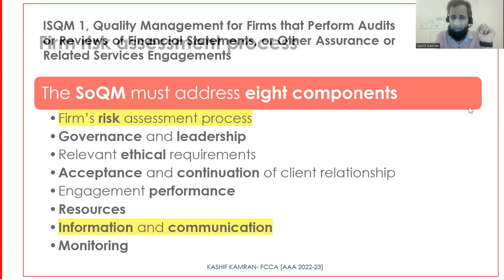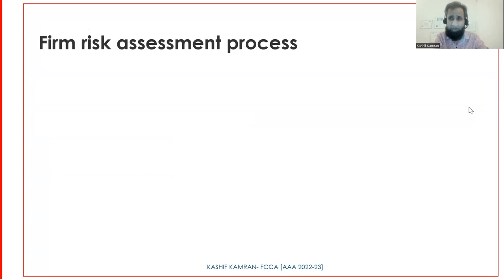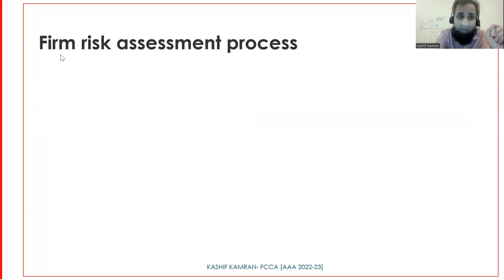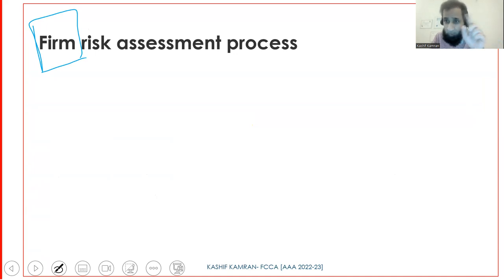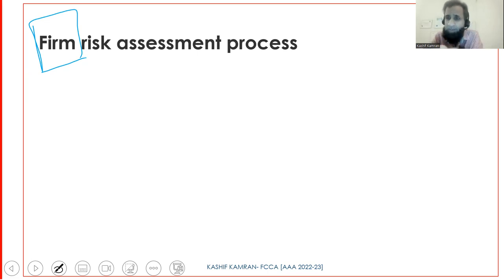The first component — and this is the new one, not previously in ISQC1 — is the Firm Risk Assessment Process. We're not talking about audit risk assessment or risk of material misstatements. We're talking about how an audit firm assesses risk within the firm itself, within the system of quality management, to ensure risks are mitigated and identified.